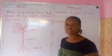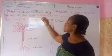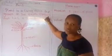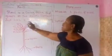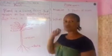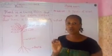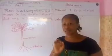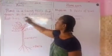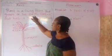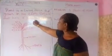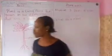What is plants? Plants is a living thing that grows on the earth's surface, that has a stem, leaves and roots.